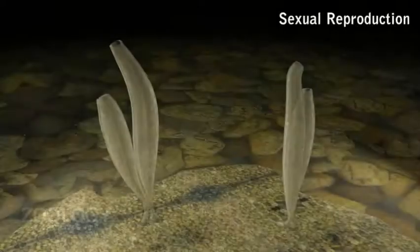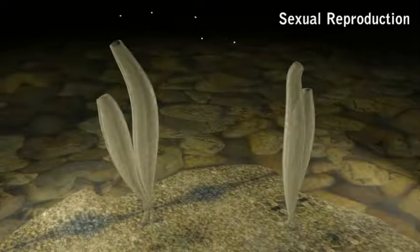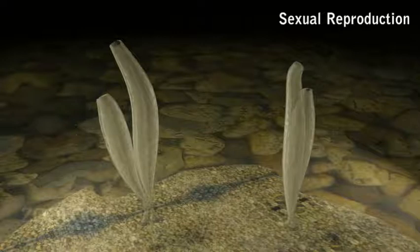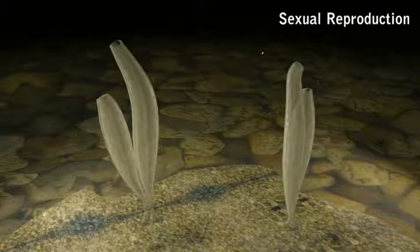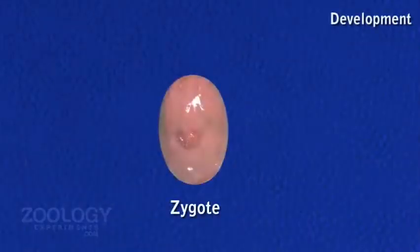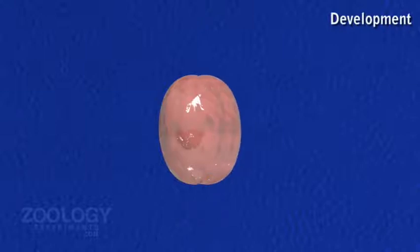In sexual reproduction, Leucosolenia is monoecious — male and female reproductive cells or gametes are formed in the same individual. No special gonads are formed; sperm and ova are derived from archaeocytes by gametogenesis. Sperms are released into seawater and make their way into another sponge to a region of a mature ovum.